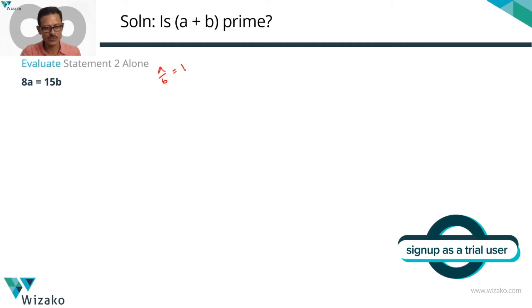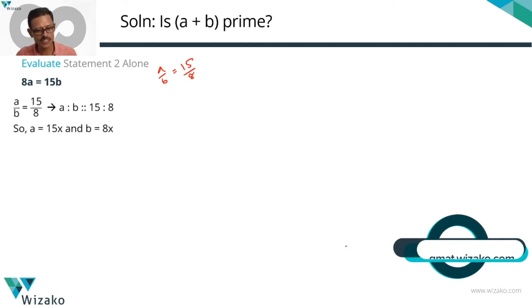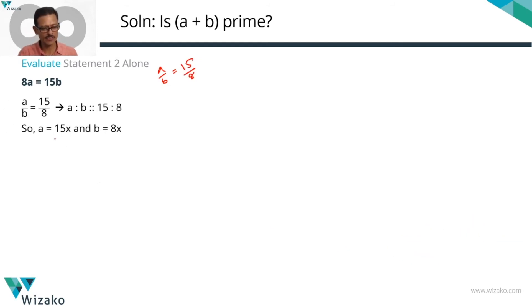a/b in this case is going to be 15/8. So a:b = 15:8. If a = 15x, then b = 8x. We need to check whether a + b is prime. a + b in this case would be 15x + 8x = 23x. 23 is prime.